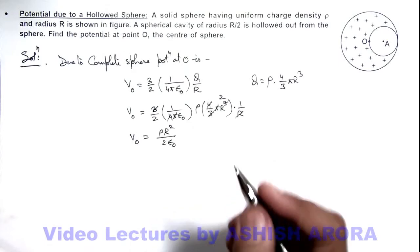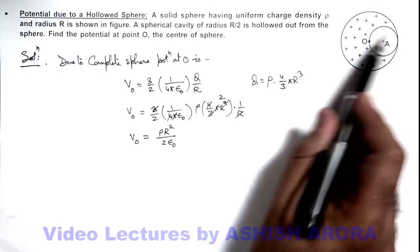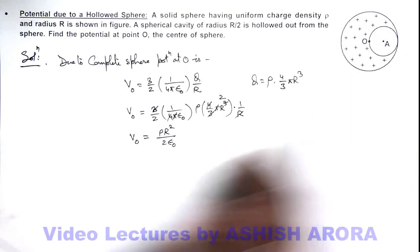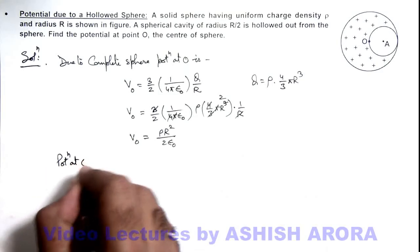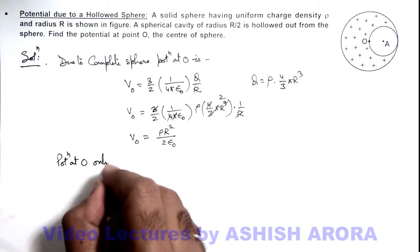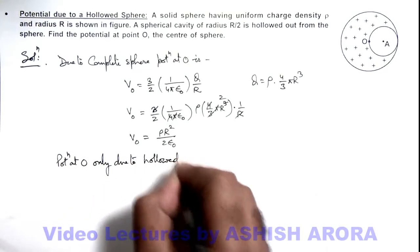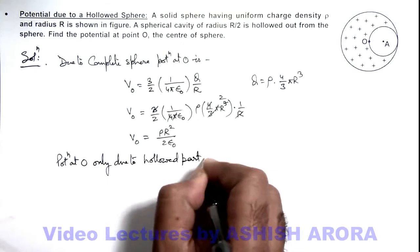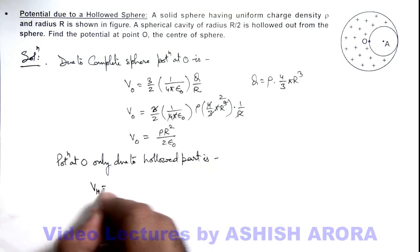And if we calculate the potential at O only due to the charge within this region which we wish to remove, so we can calculate potential at O only due to hollowed part. This can be given as V due to hollowed part is...